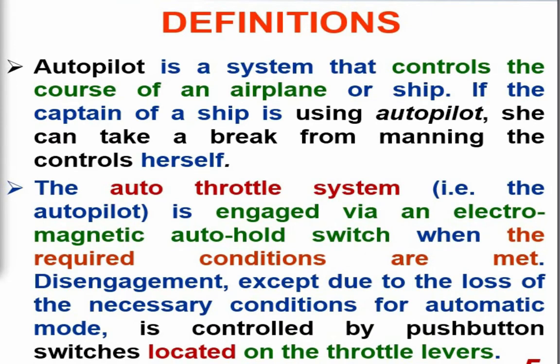The auto throttle system: an aircraft's auto throttle system — which is part of the autopilot — is engaged via an electromagnetic auto hold switch when the required conditions are met. Throttle is used to increase or decrease the thrust of the aircraft. When the aircraft is under autopilot control, the auto throttle system manages the thrust, engaged through the electromagnetic auto hold switch.